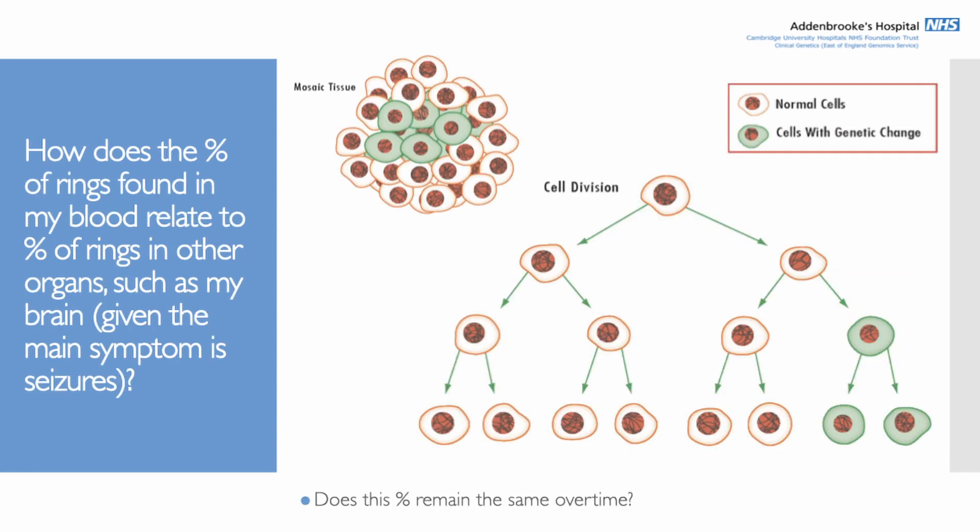A common question is about the percentage of ring chromosomes found in the blood and how that relates to rings in other organs — for example, the brain, given that the main symptom is seizures. The short answer is that it doesn't really relate. What that percentage tells us is, on average, what percentage of all the cells in the body have ring chromosome 20 — but it doesn't tell us which specific cells or organs have ring 20, or what the percentage is in each of those individual organs.